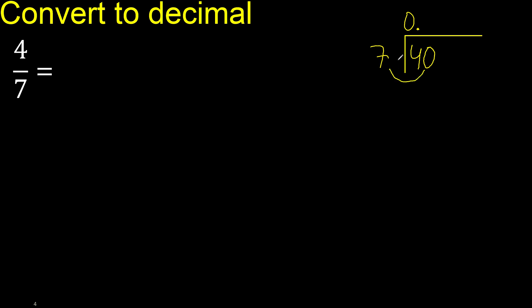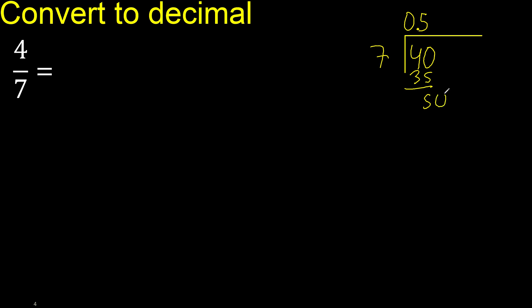40 is not less, therefore 7 multiplied by which number is nearest to 40 but not greater? 7 multiplied by 5, because 7×7=49 is greater, 7×6=42 is greater, therefore 5. Multiply by 5 is 35, subtract is 5. There is no number, therefore complete — always complete with 0 point.